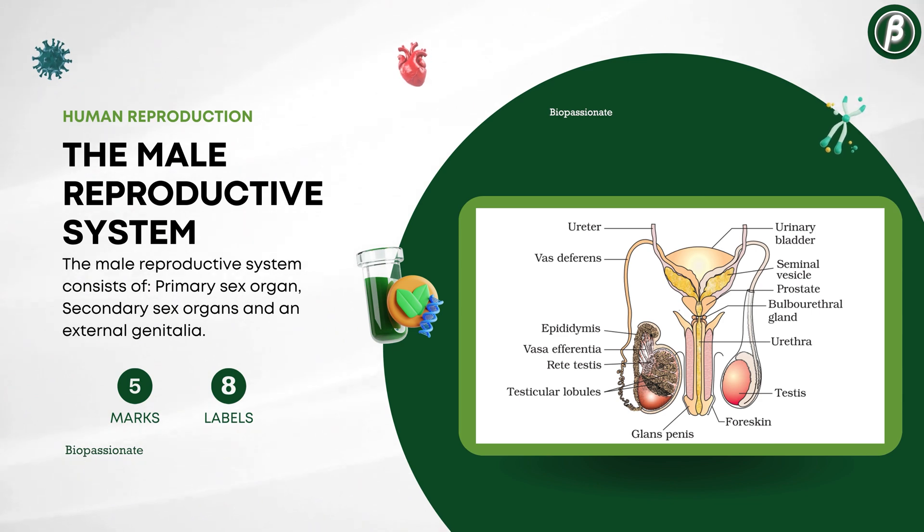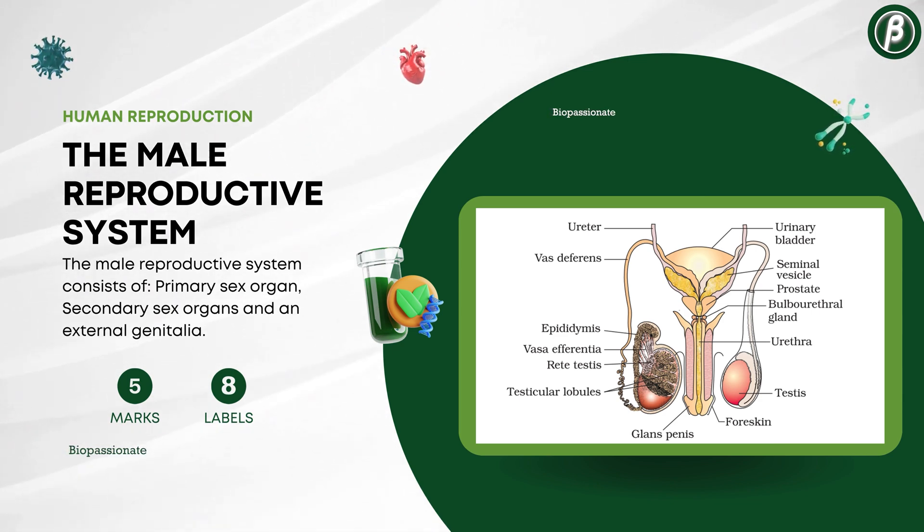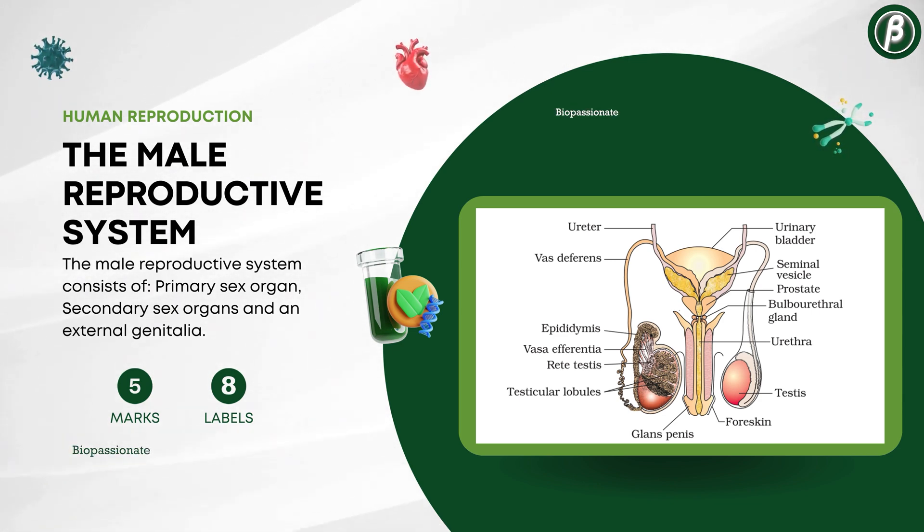Number 4: The male reproductive system, for 5 marks with a minimum of 8 labels.